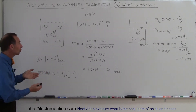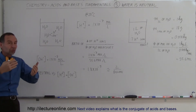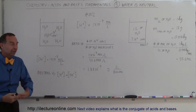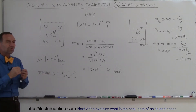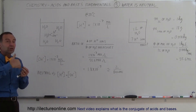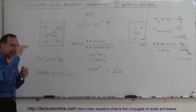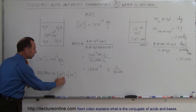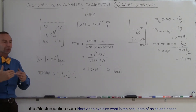So what happens to a neutral substance like pure water when you add an acid to it? When you add an acid, you increase the number of hydrogen ions and decrease the number of hydroxide ions. If there are more hydrogen ions than hydroxide ions, it's no longer neutral — the aqueous solution is now acidic.